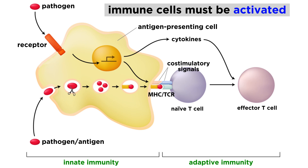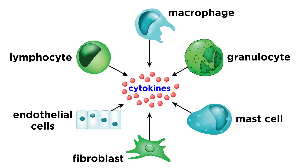We'll talk about this process in considerable depth later in the series. Additionally, many types of immune cells send cytokine signals to tell other cells to ramp down the immune response and begin repairing damaged tissue.